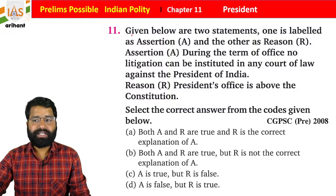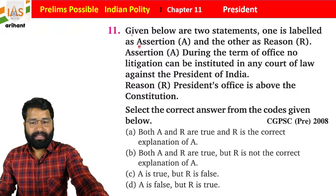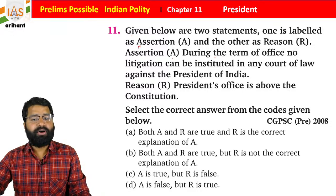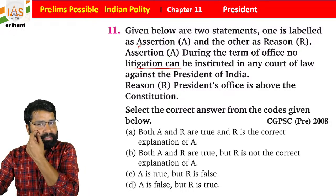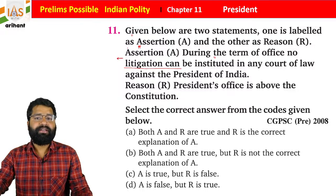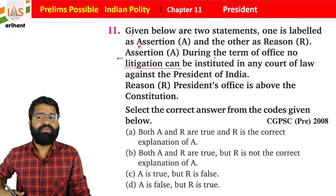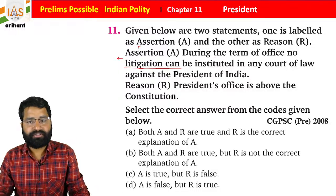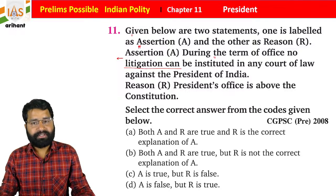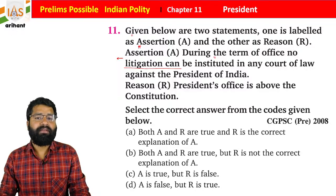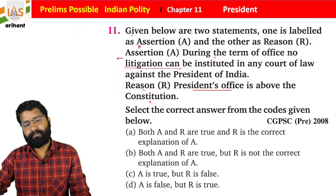Question 11 is an assertion-reason type. The Assertion states: during the term of office, no litigation can be instituted in any court of law against the President of India — meaning the President cannot be charged criminally or civilly, though for civil matters a 60-day prior notice is required. The Reason states: the President's office is above the Constitution. The Assertion is correct.